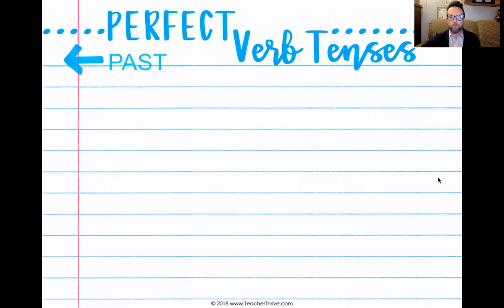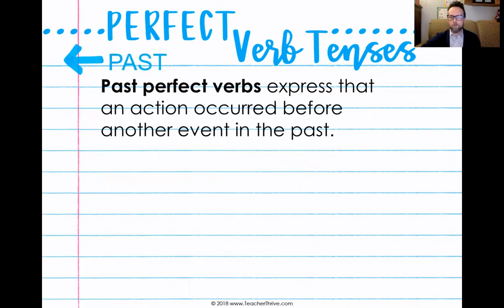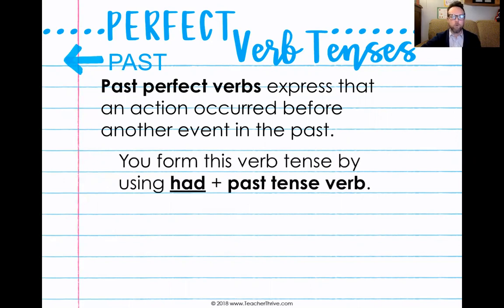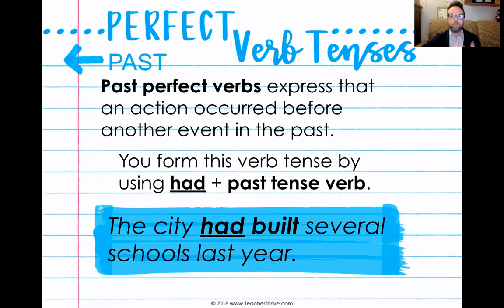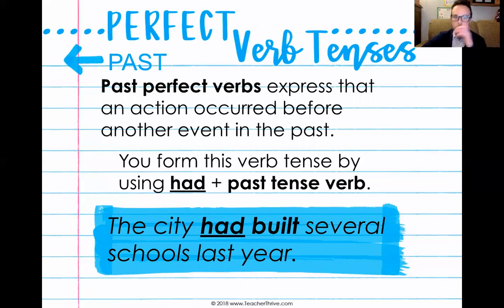Perfect verb tenses are verbs that tell the order in which things happen. Our past perfect verbs show that an action occurred before another action or before another event in the past. We form this verb tense by using 'had' plus a past tense verb. So: 'The city had built several schools last year.' All of these things happened in the past, but they happened in an order. Past perfect: 'had' plus a past tense verb.